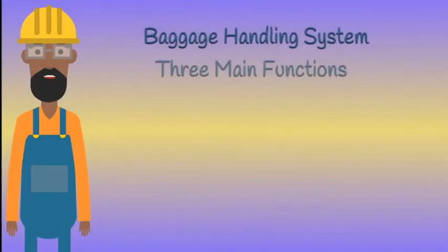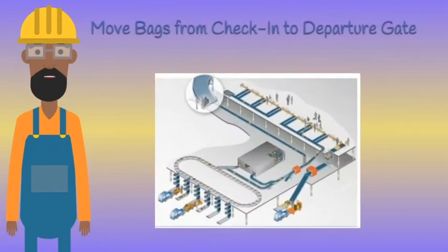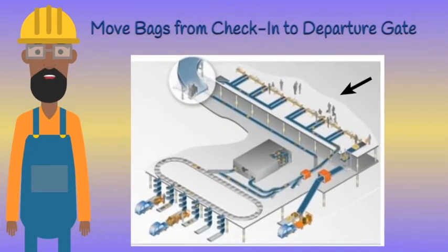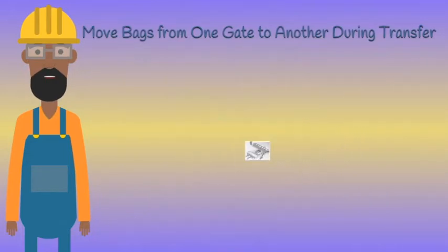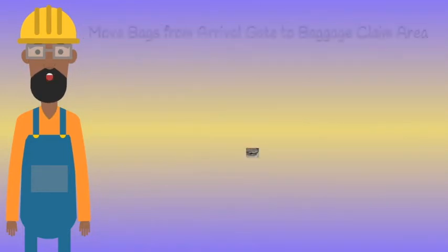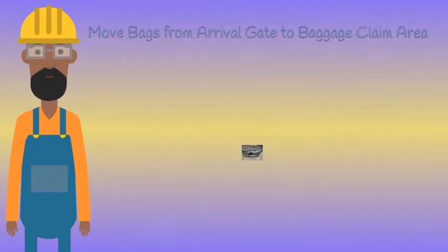A Baggage Handling System has three main functions: move bags from the check-in area to the departure gate, move bags from one gate to another during transfer, and move bags from the arrival gate to the baggage claim area.